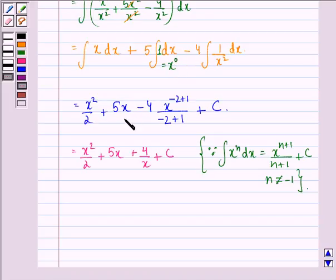For the third term, n is -2, so we get x^(-2+1)/(-2+1). On simplification, our answer to this question is x²/2 + 5x + 4/x + C.